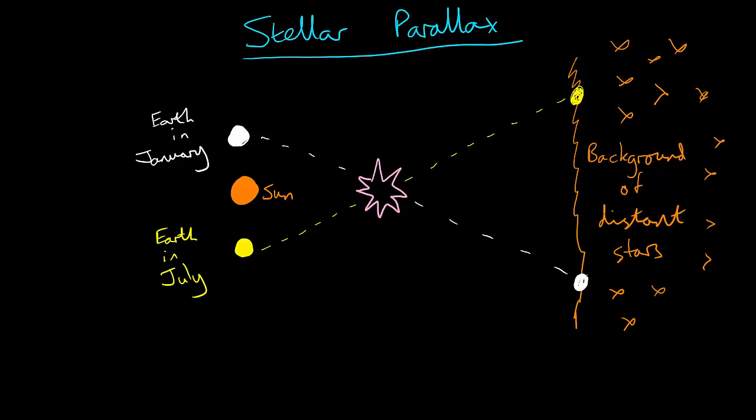The Earth is orbiting the Sun, so we simply need to take two photographs of the sky six months apart, for example January and July. This is when the Earth is at two extreme positions of the orbit around the